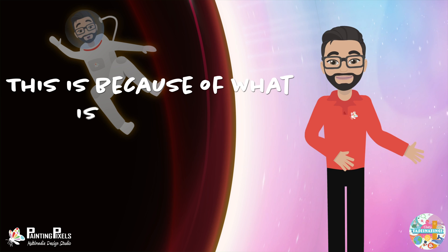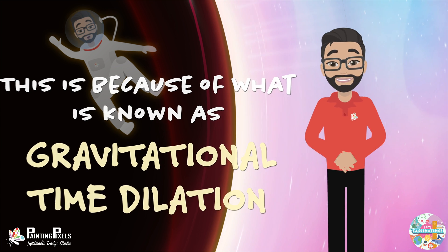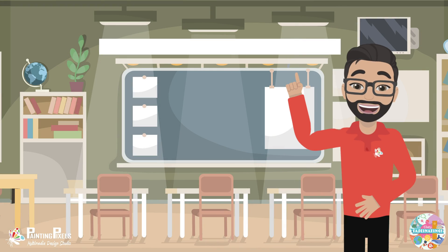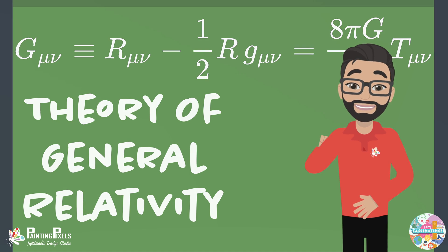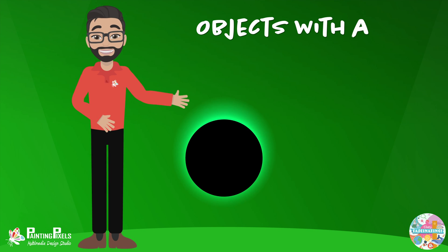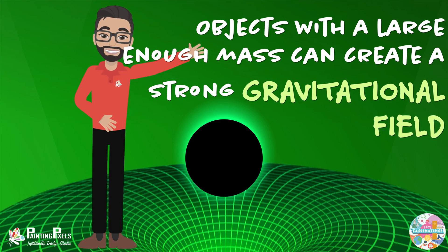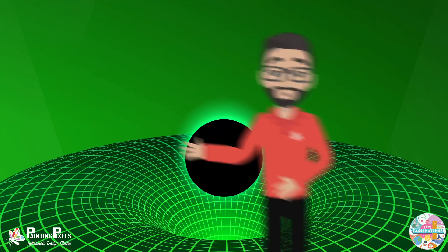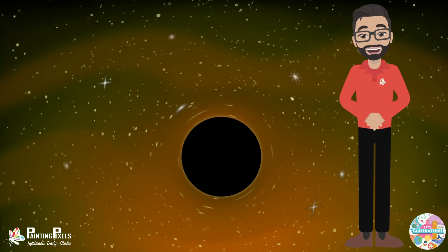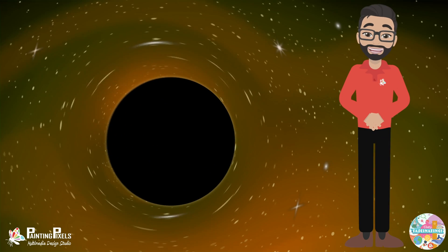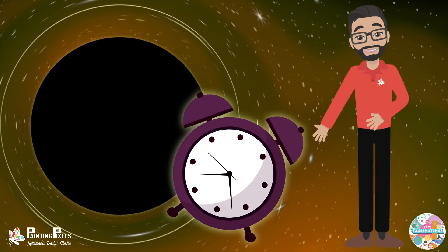This is because of what is known as gravitational time dilation, as mentioned in Einstein's theory of general relativity. Objects with a large enough mass can create a strong gravitational field which literally curves space-time. The stronger the gravity, the more it curves and the slower time proceeds.